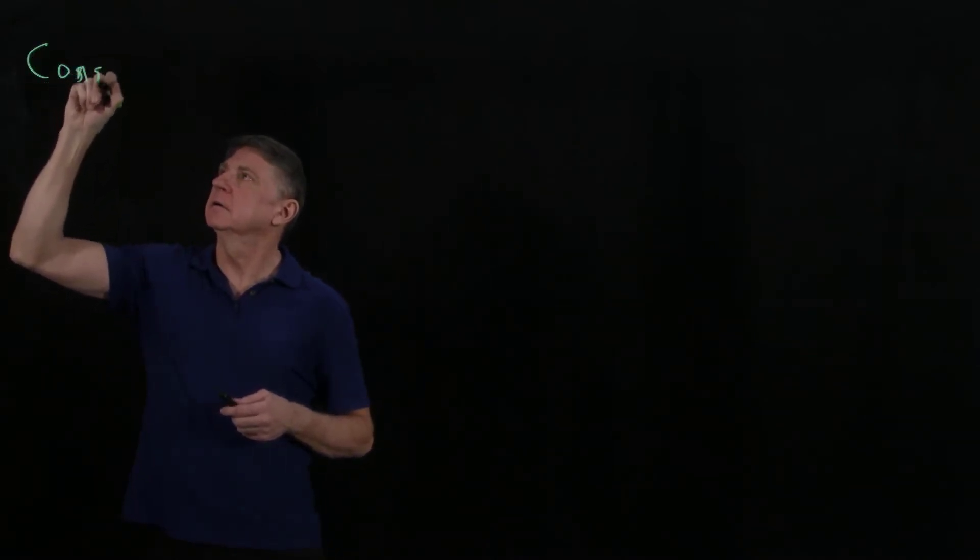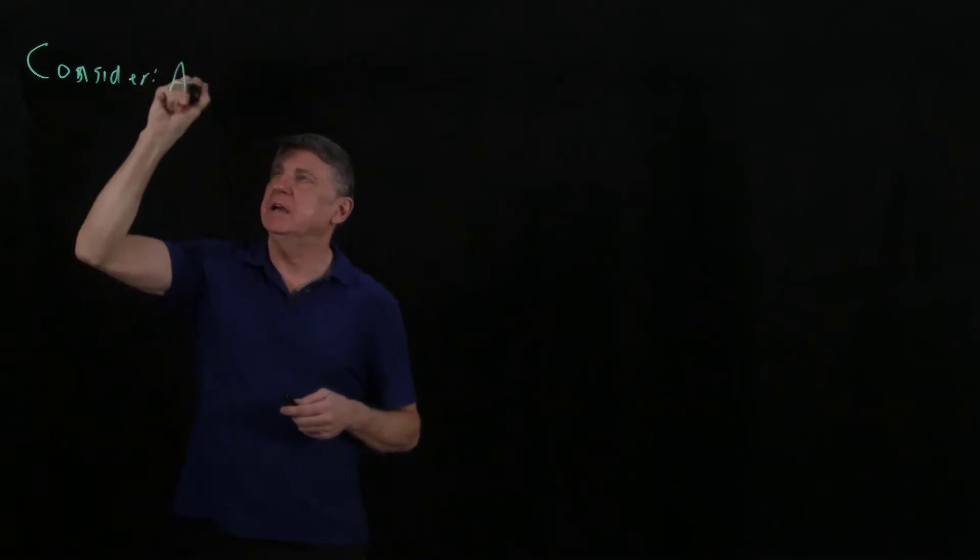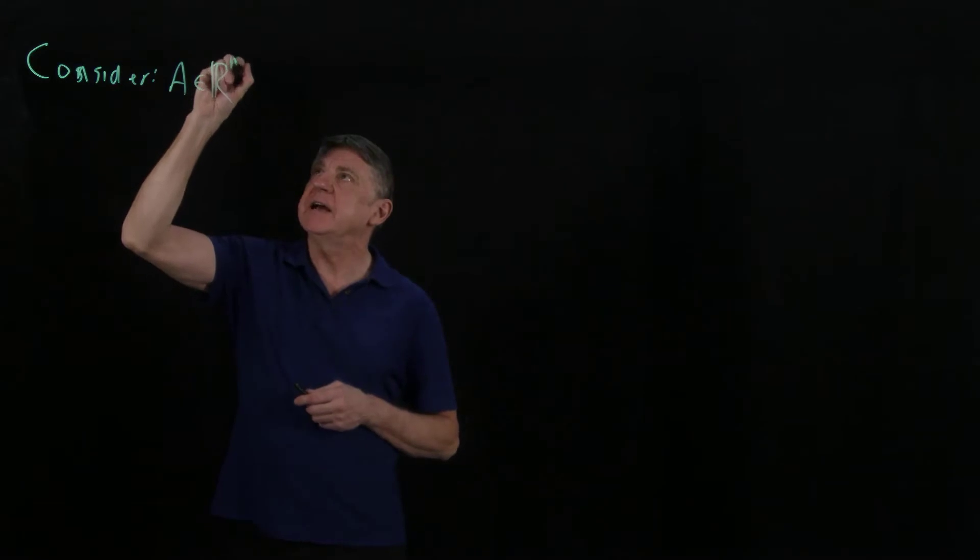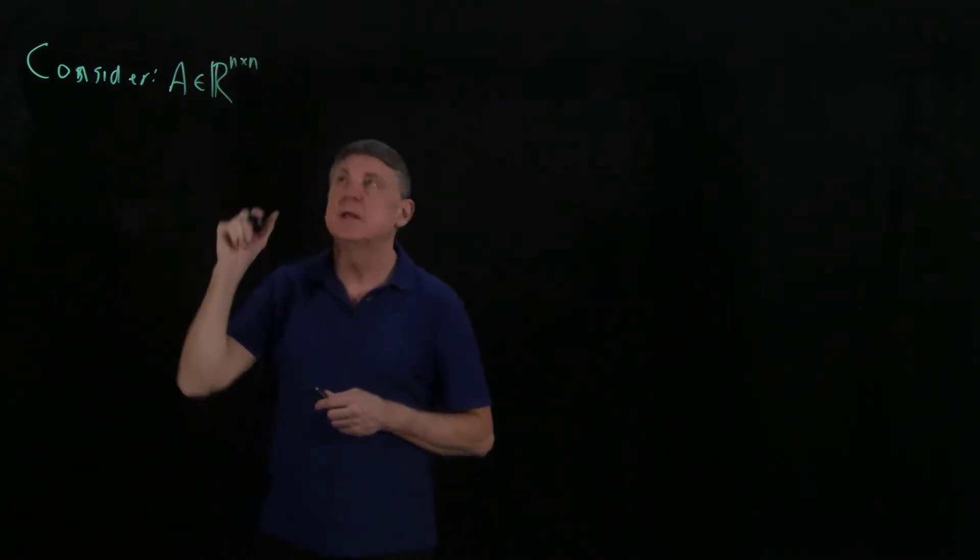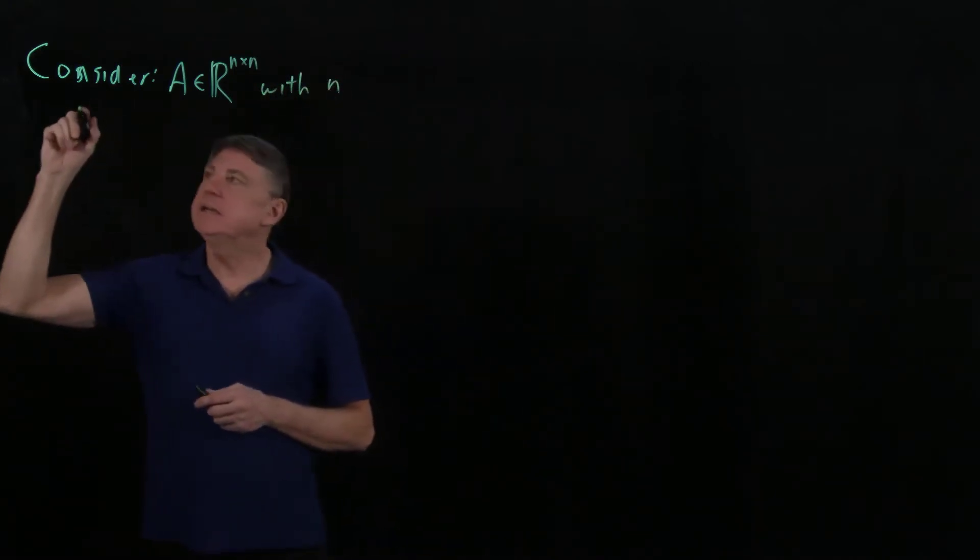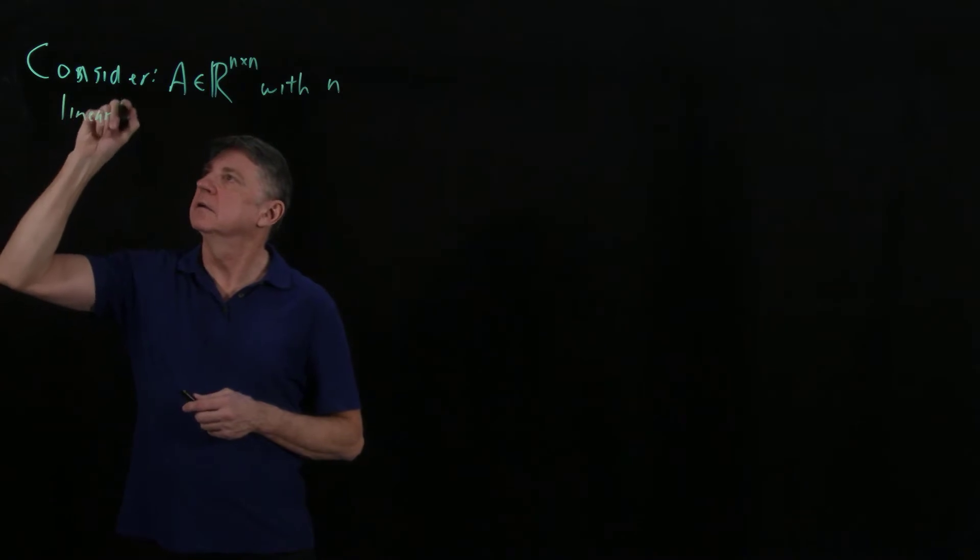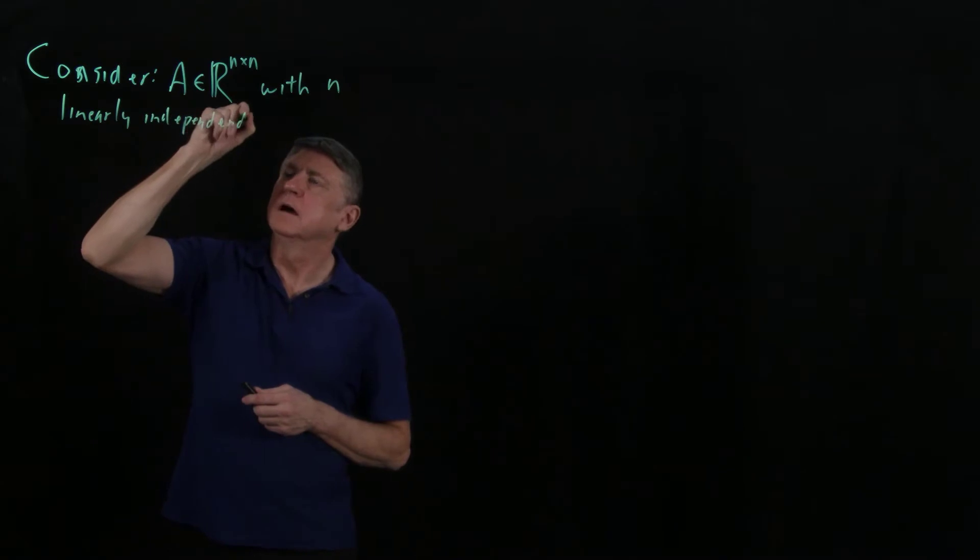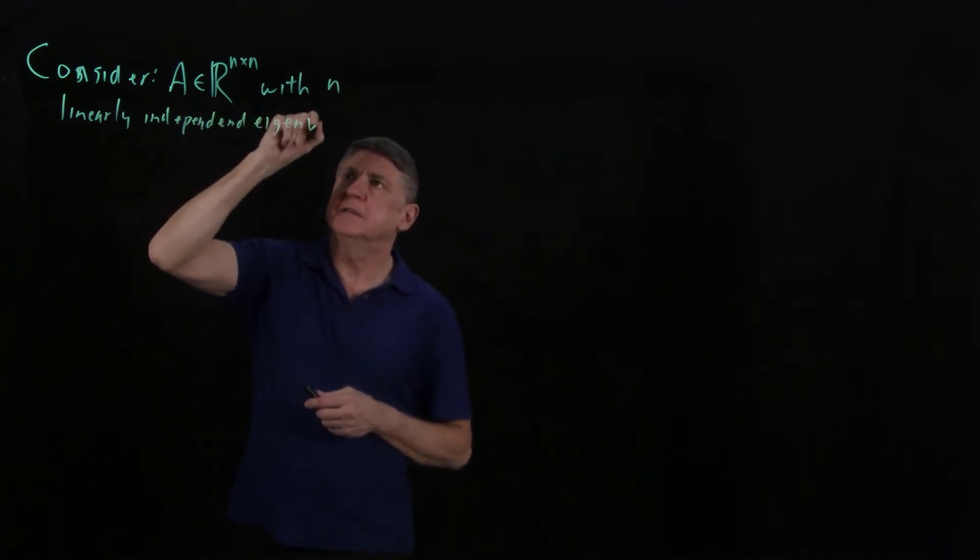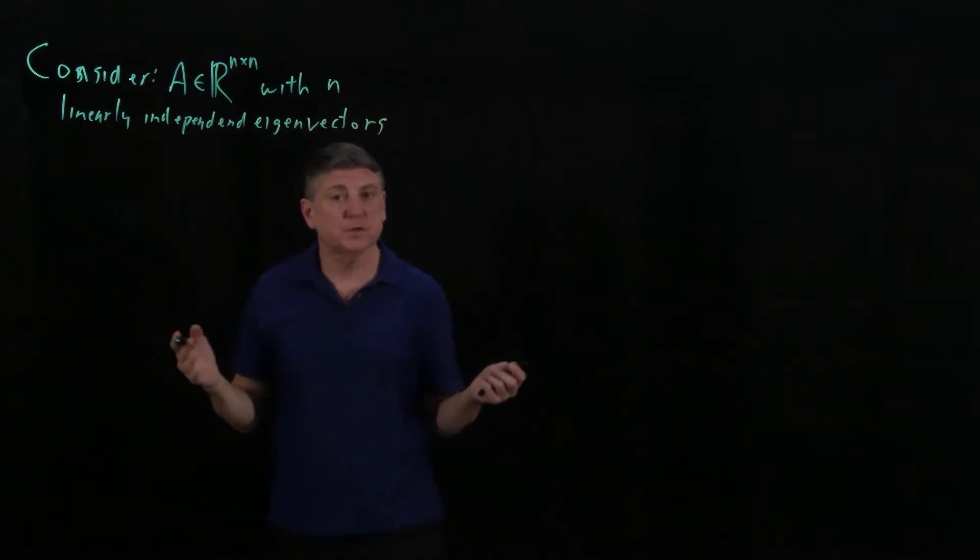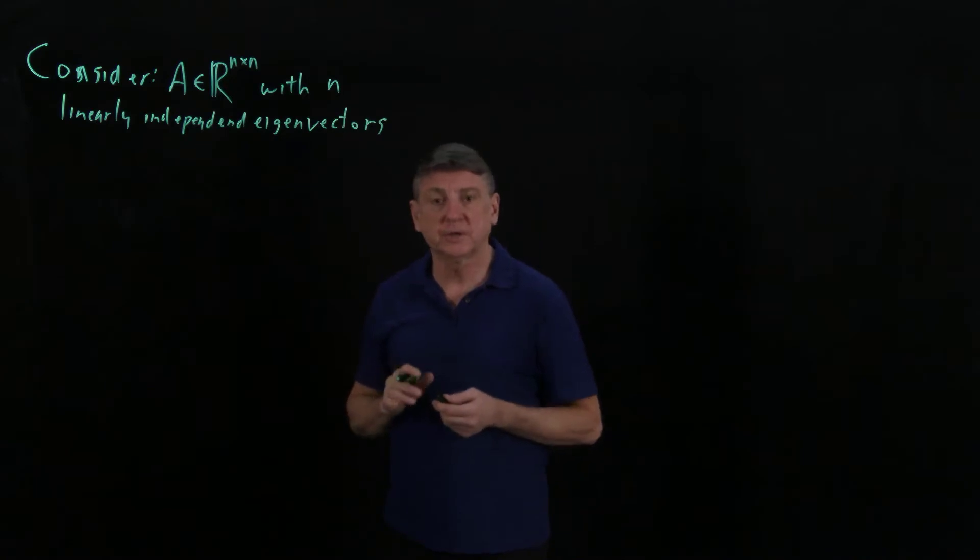Let's begin by considering a matrix A, and we'll suppose that the matrix A has all real entries, and that it has n rows and n columns, and we'll suppose that it has n linearly independent eigenvectors. Linear independence is a concept that we've come across in prerequisite material and that we explored in an earlier lecture.